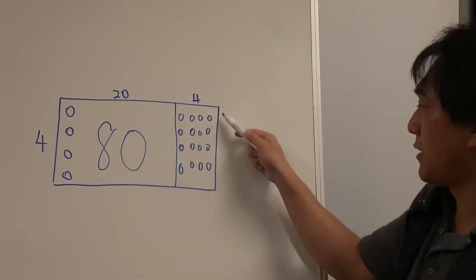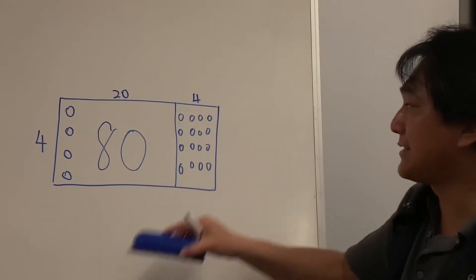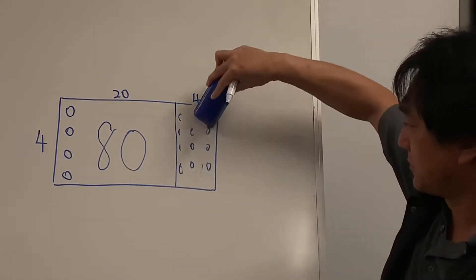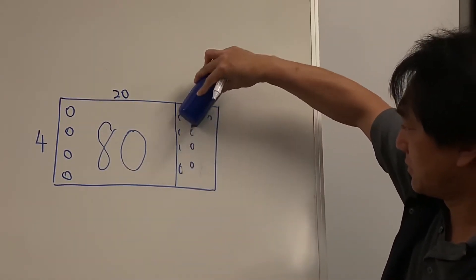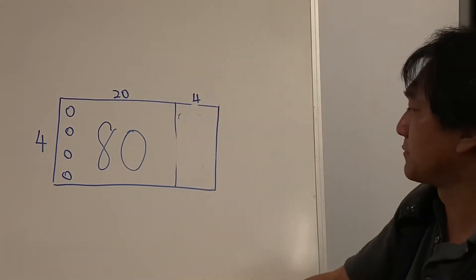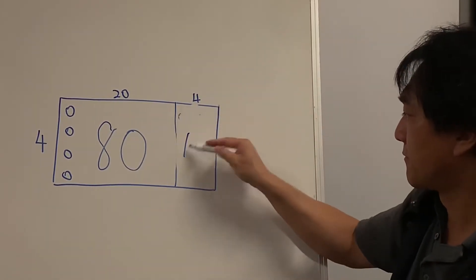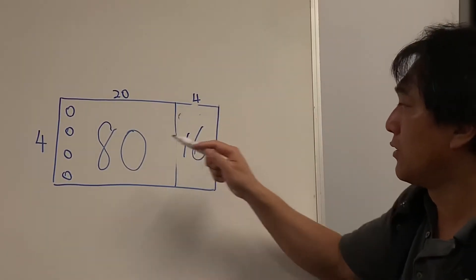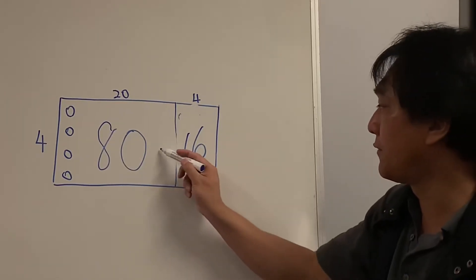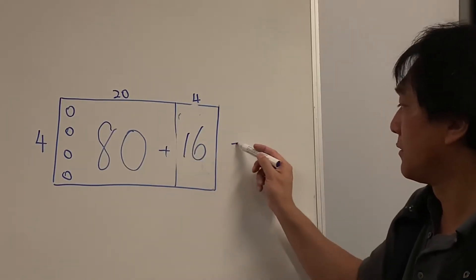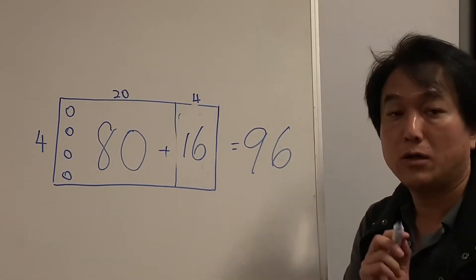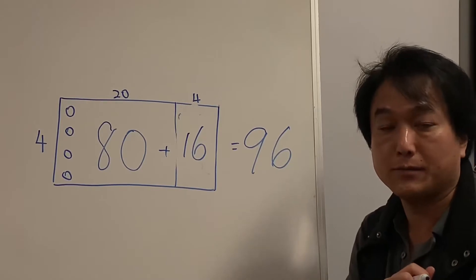In this part there are 16 cupcakes. All together we have 96 cupcakes. Do you remember this? We're using this to do the division.